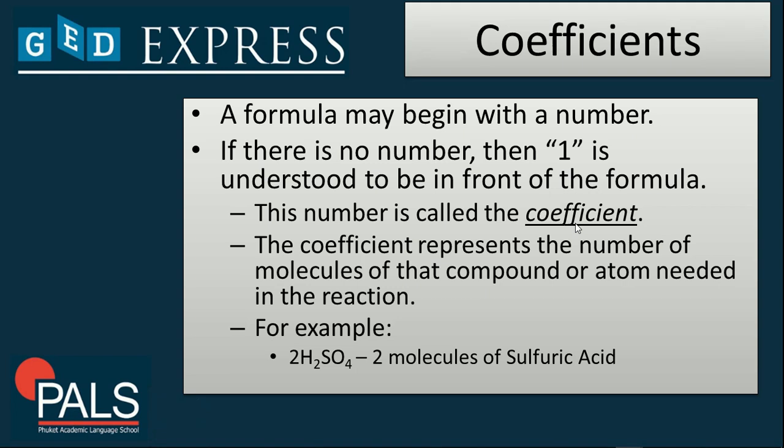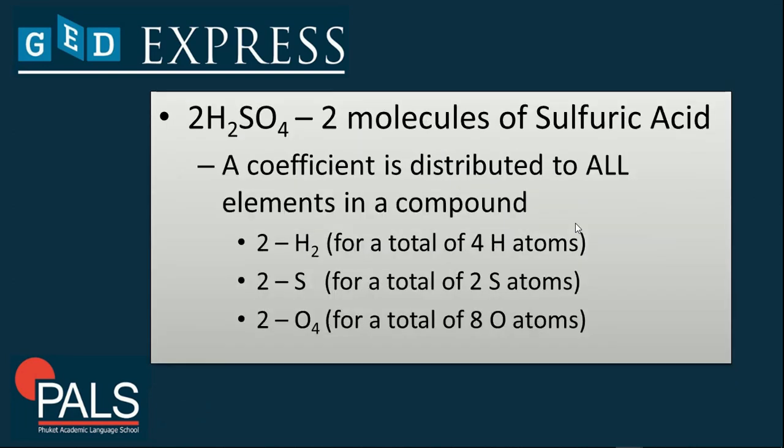The coefficient represents the number of molecules of that compound or atom needed in the reaction. For example, you have there 2H2SO4. That means it has two molecules of sulfuric acid. The number before the chemical formula, the coefficient, identifies the number of molecules present in the chemical reaction.